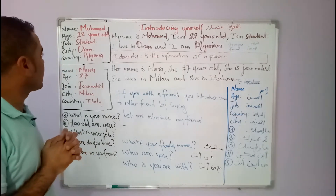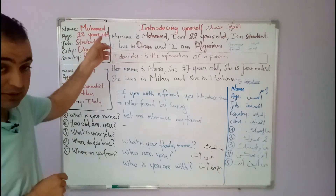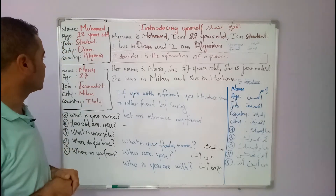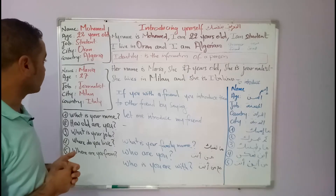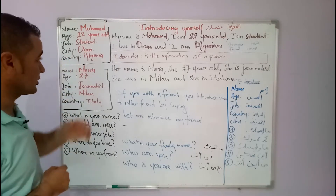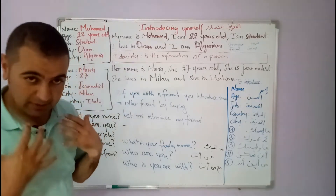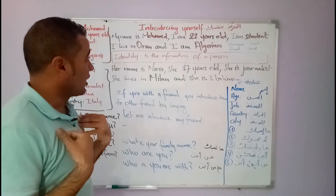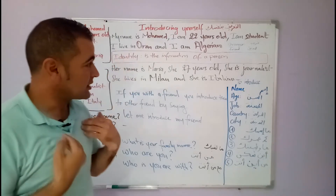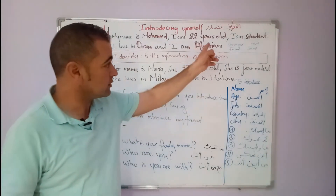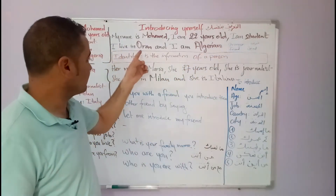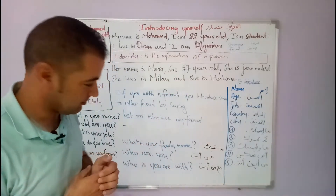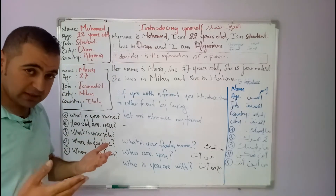Let's have the first person. His name is Mohammed, his age is 22, his job is student, and he lives in the city of Algiers in Algeria. If I were Mohammed, I would say: my name is Mohammed, I am 22 years old, I am a student, I live in Algeria, I am Algerian or I am from Algeria.